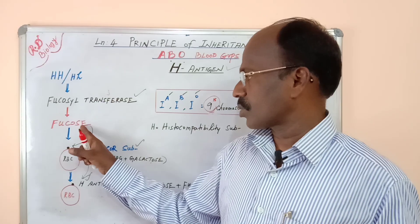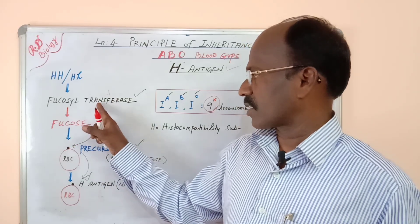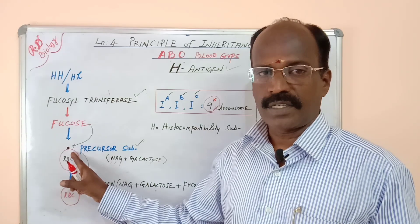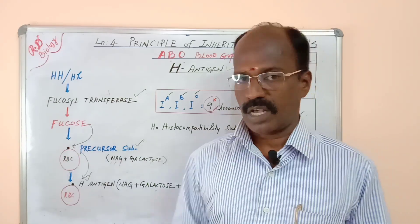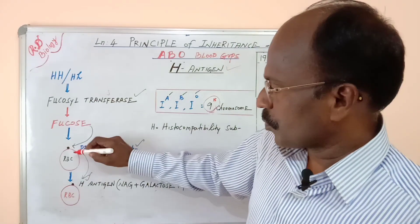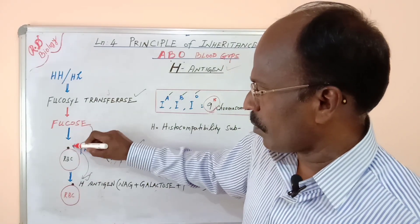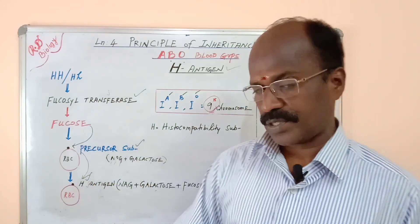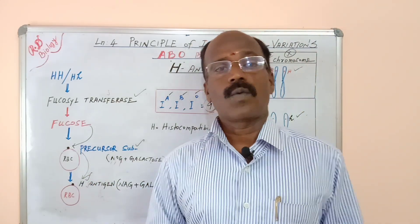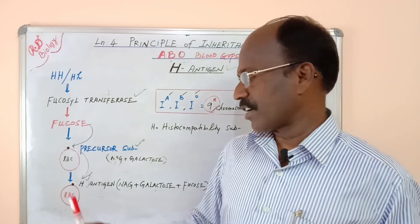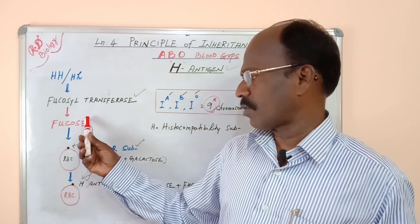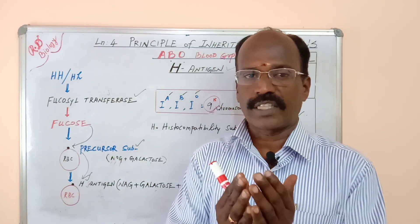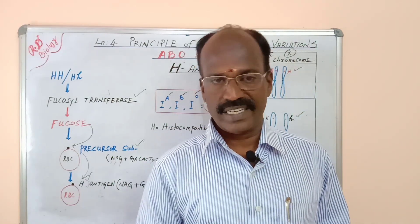The fucose carried by Fucosyl transferase to the surface of the RBC combines with a precursor substance. This precursor and fucose combine together to produce a substance — that is what we call H substance, or H antigen. So H antigen is nothing but the combination of fucose and a precursor.